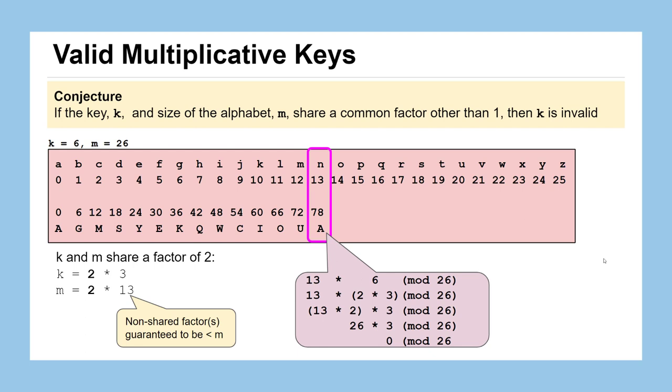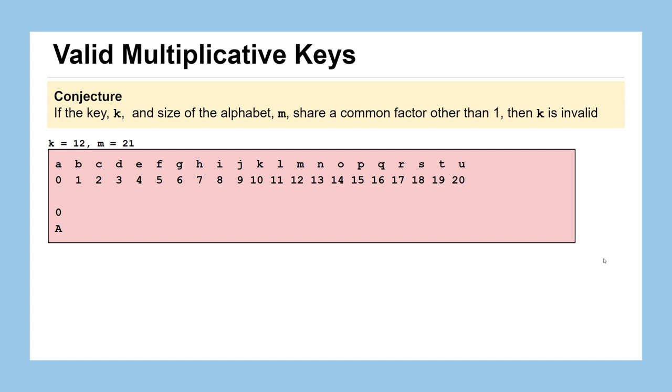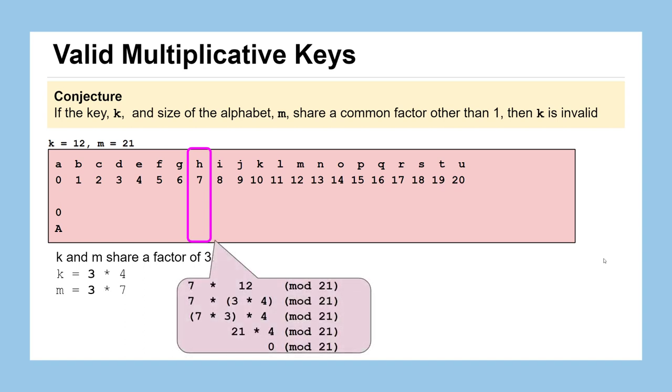Let's try it with a different alphabet with a K of 12 and an M of 21. They share a factor of 3. If we go there and we multiply again by our K value, by rearranging the factors, we are guaranteed that we're going to have a 3 in our key, because that's the shared factor, which means we can guaranteed group it with the non-shared factor in M of 7, which means that we're guaranteed that this product is going to be a multiple of M, 21, which means that we know with certainty that this product will be 0 when we mod by M.